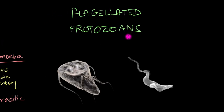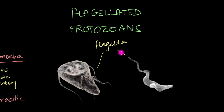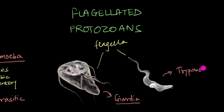Moving on to our next group, we have the flagellated protozoans or flagellates — protozoans that move around with the help of one or more whip-like structures called flagella. In these pictures you can actually spot the flagella very clearly. In some flagellates, the flagella also help in gathering food other than just locomotion. Flagellated protozoans include both parasites as well as non-parasites. Examples of parasites include giardia and tripanosoma, and both of these parasites are known to cause diseases in humans.